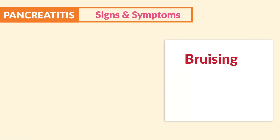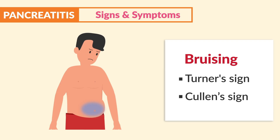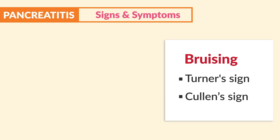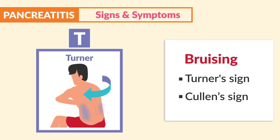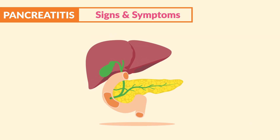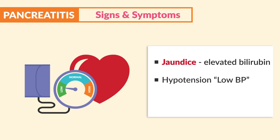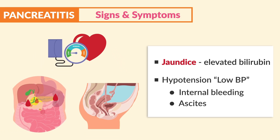Bruising is another critical sign. Turner's sign is bruising or ecchymosis on the flanks or sides of the body — think T for Turner's, you can see the bruising when you turn the client. Cullen's sign is edema and bruising around the belly button (umbilicus) — think C for Cullen, like a belly ring shaped like a C. Clients can also present with liver disease symptoms: jaundice from elevated bilirubin, hypotension from internal bleeding, and ascites — fluid in the abdomen causing the stomach region to appear big and bloated.